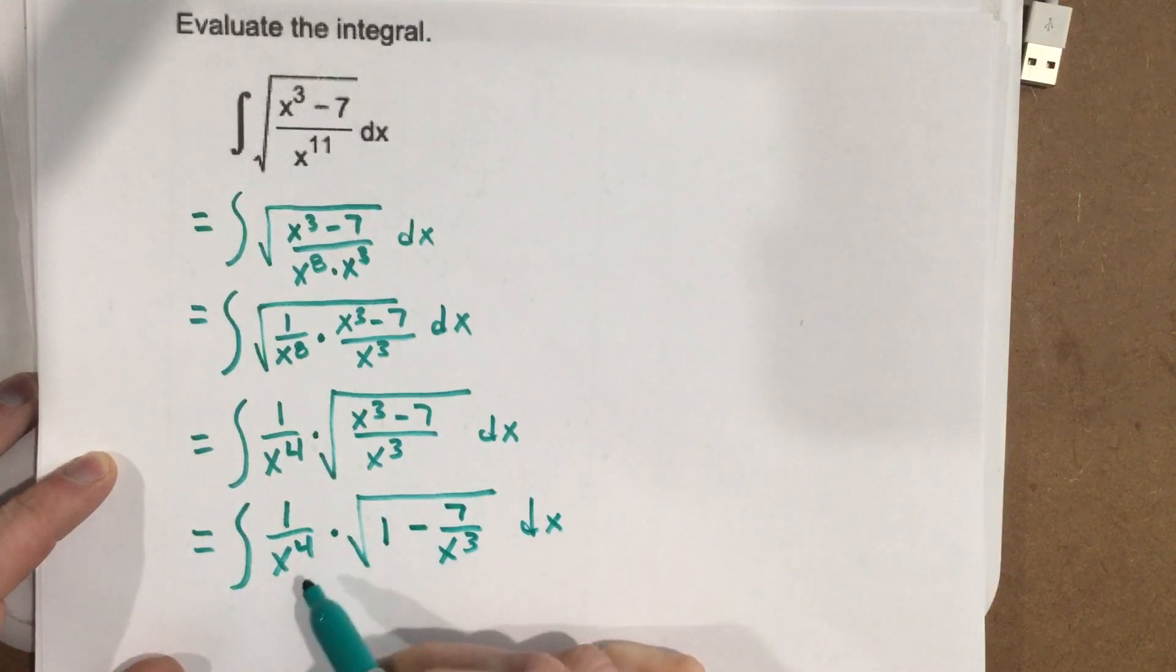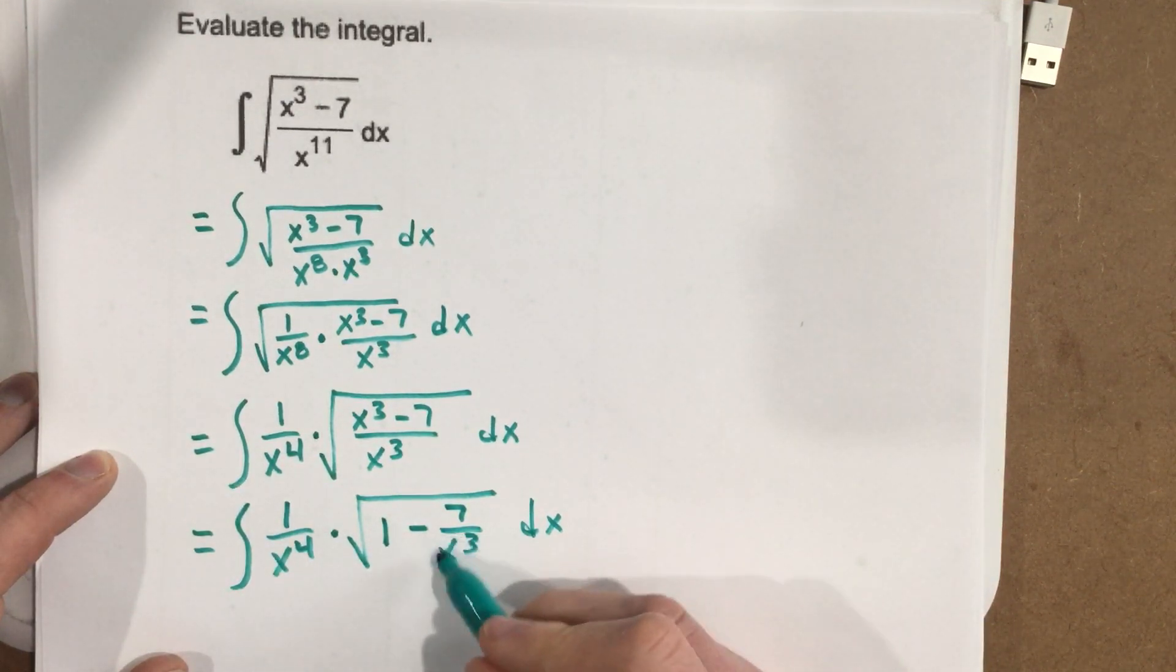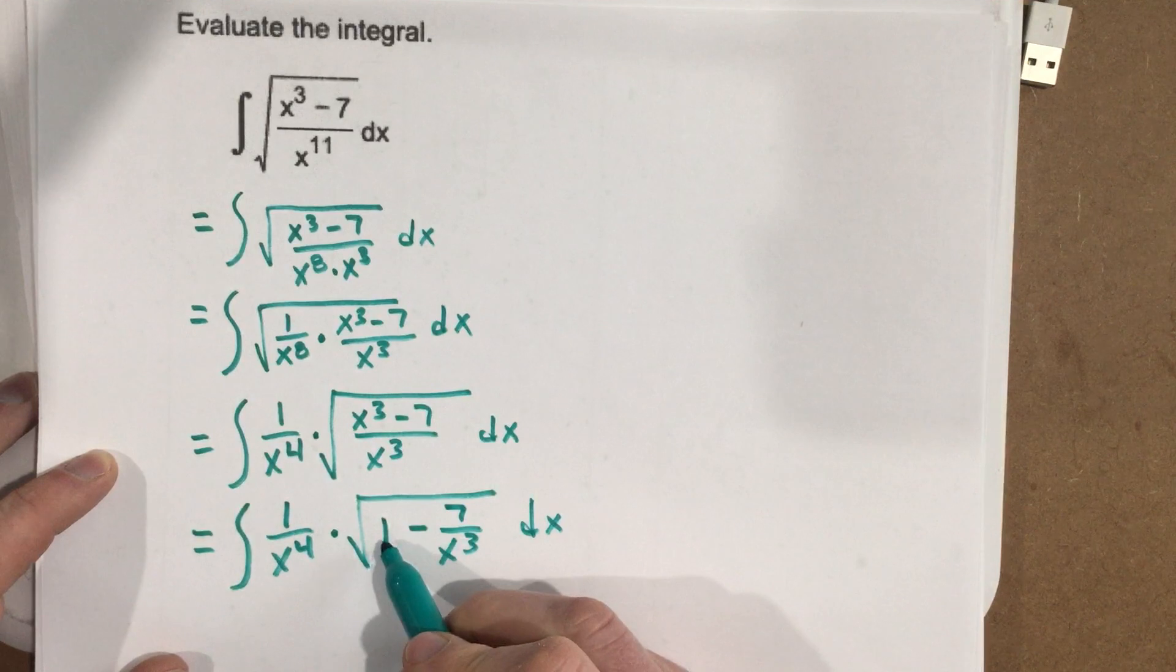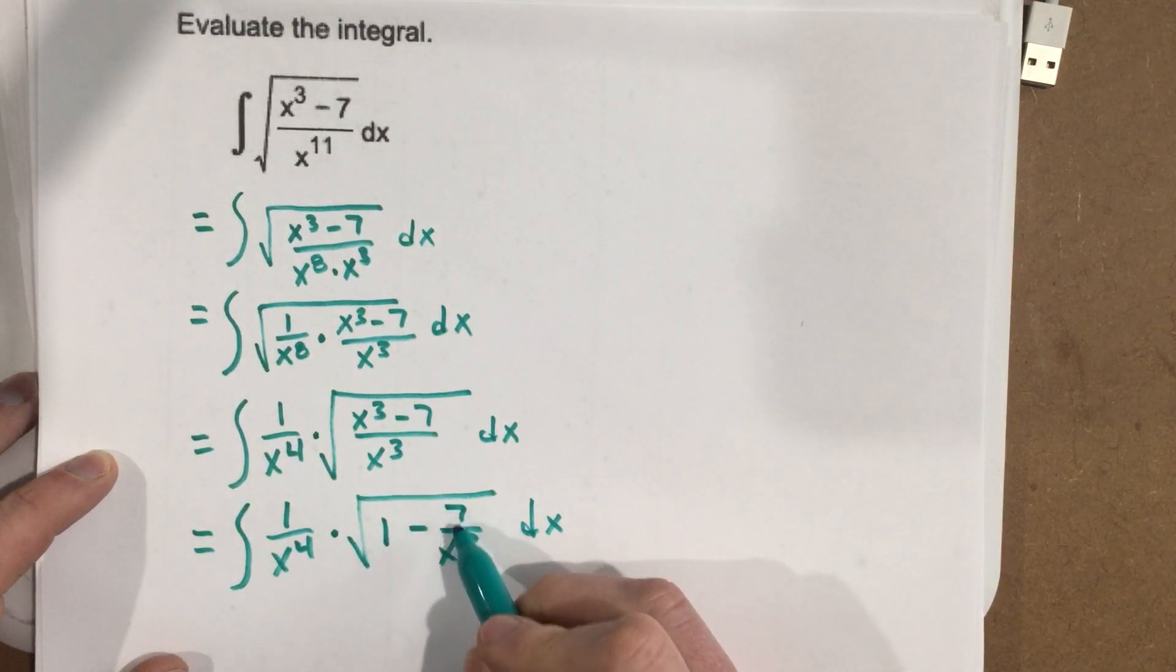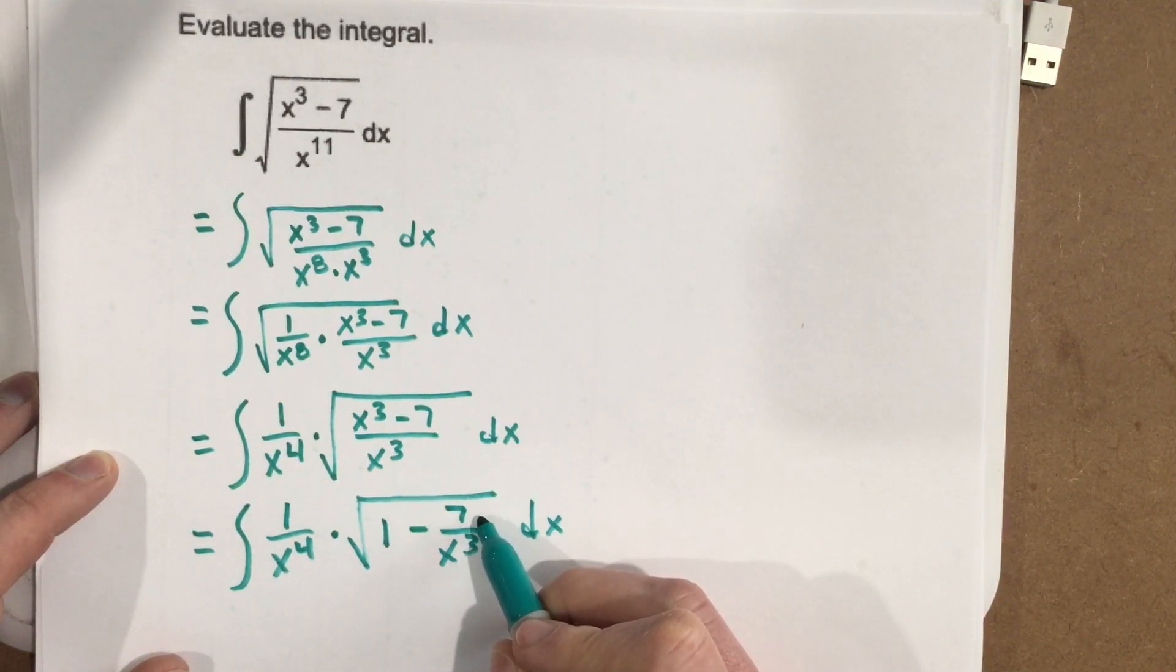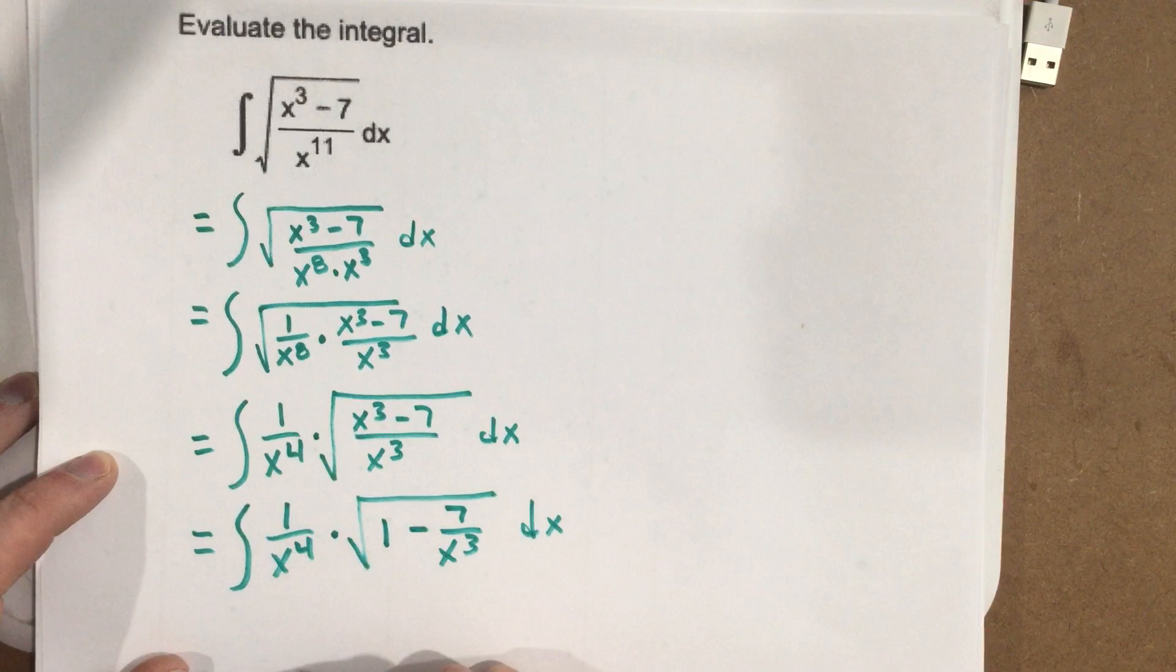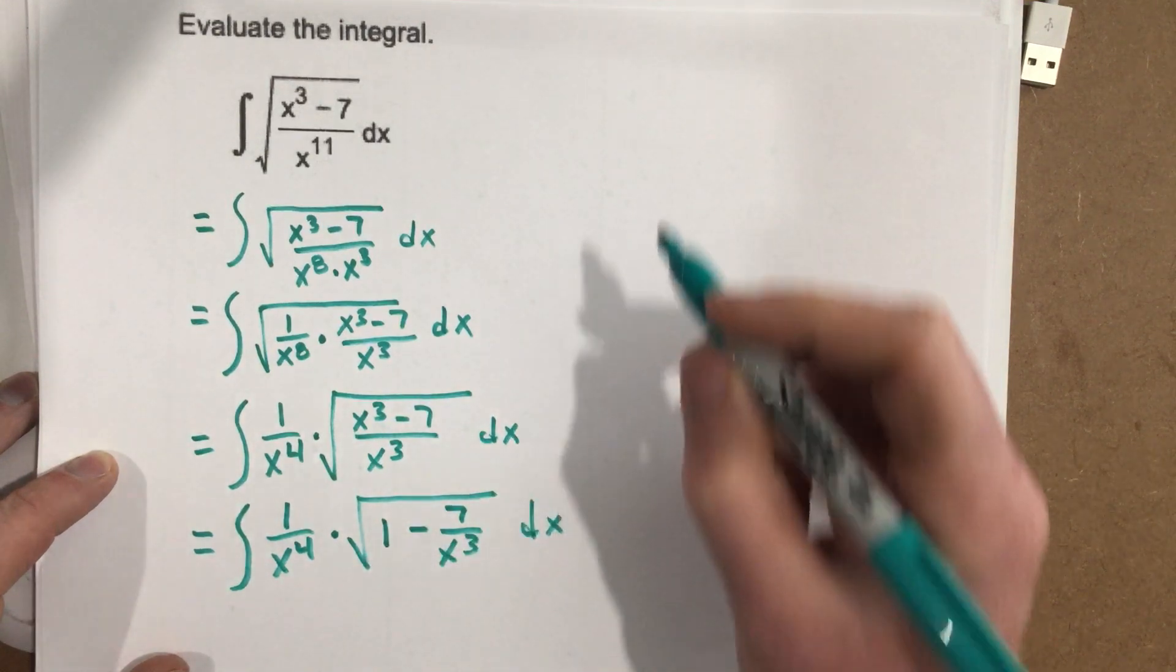And I've simplified as far as I can simplify, but you'll see that gives us some power here. I can see that if I take and make u equal to 1 minus 7 over x cubed, when I do the derivative of this, I'm going to move x cubed to the top. That'll be x to the negative 3. I'll subtract 1, which will make it x to the negative 4. And you can see that I'm probably going to get some cancellations here.